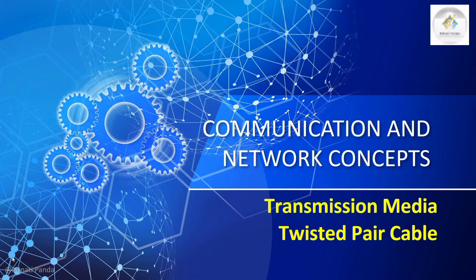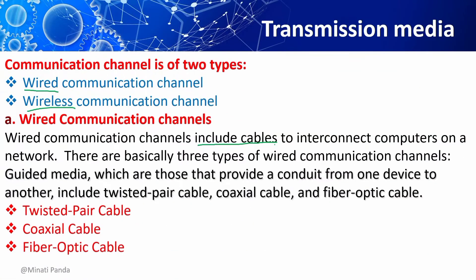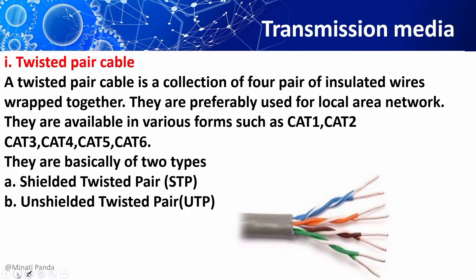Hello everyone, welcome to my channel. In today's video we'll discuss twisted pair cable. Communication cables are of two types: one is wired communication channel and the second one is wireless communication channel. Wired communication channels include cables to interconnect computers on a network. There are basically three types of wired communication channels: twisted pair cable, coaxial cable, and fiber optic cable. This transmission media is used to deliver and receive data or information.